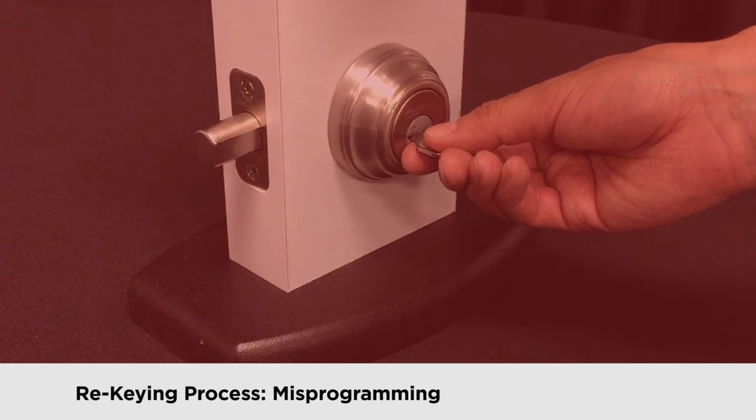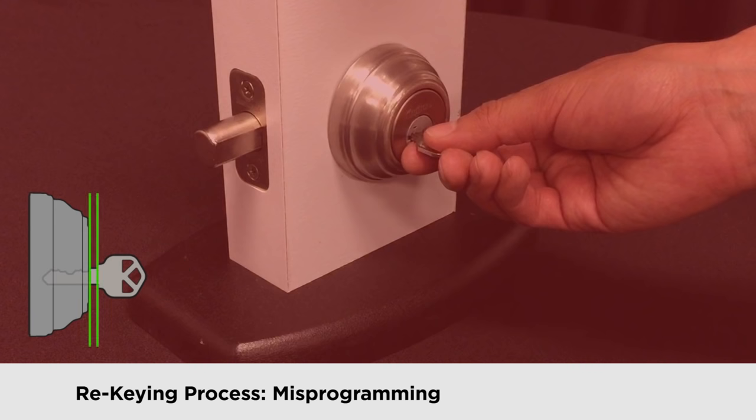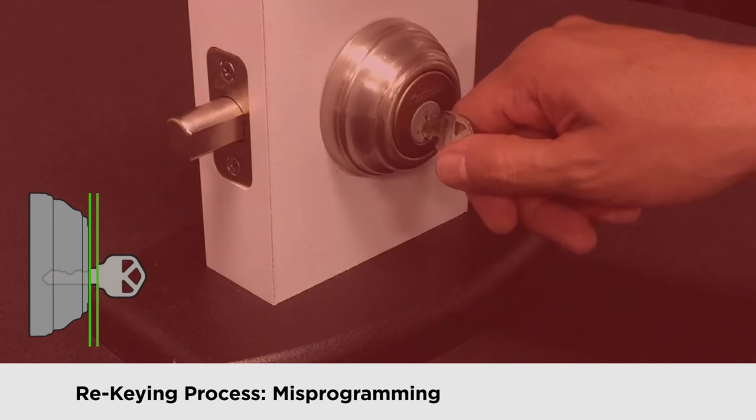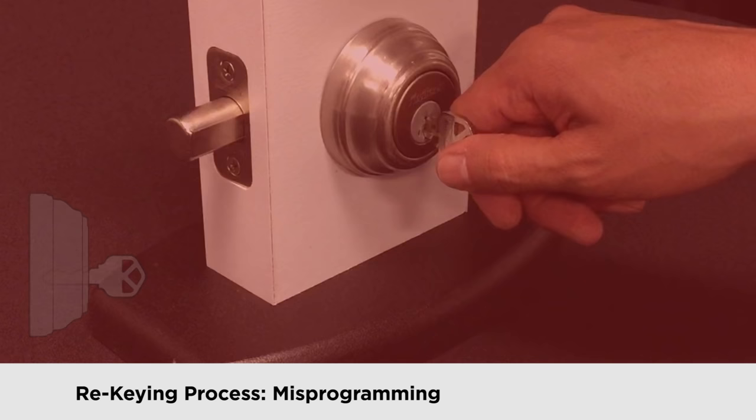Okay, here's where the misprogramming can occur. If you don't insert the key all the way into the lock, or if you accidentally pull on the key while rotating it during the next step, the cylinder will become programmed to only a portion of the key instead of the entire length.